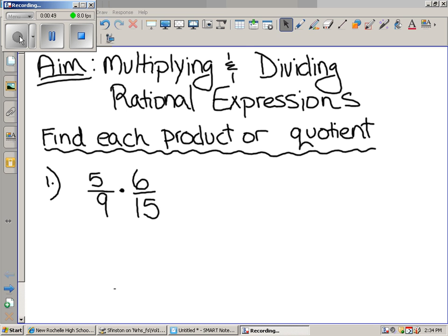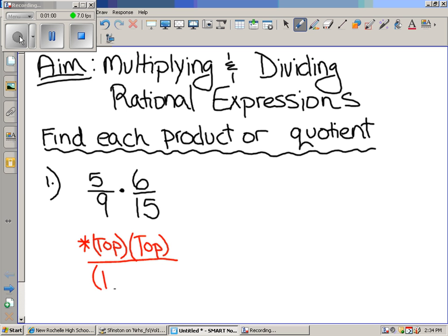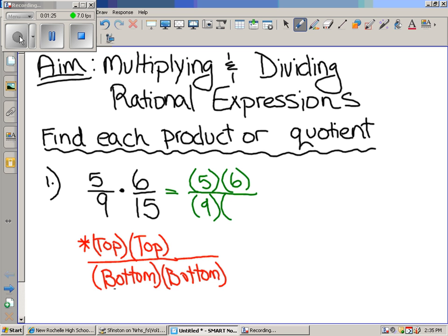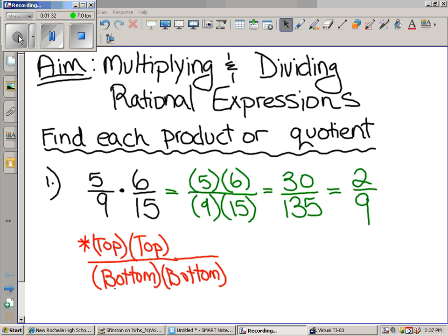So how do you do these? Top times top, bottom times bottom. And that's what we do. That's the rule. So here we go. The first thing we're going to do is just, we're going to write it just like I've written it down below. Five times six over nine times fifteen. Equals. So there we go. There's our final answer.